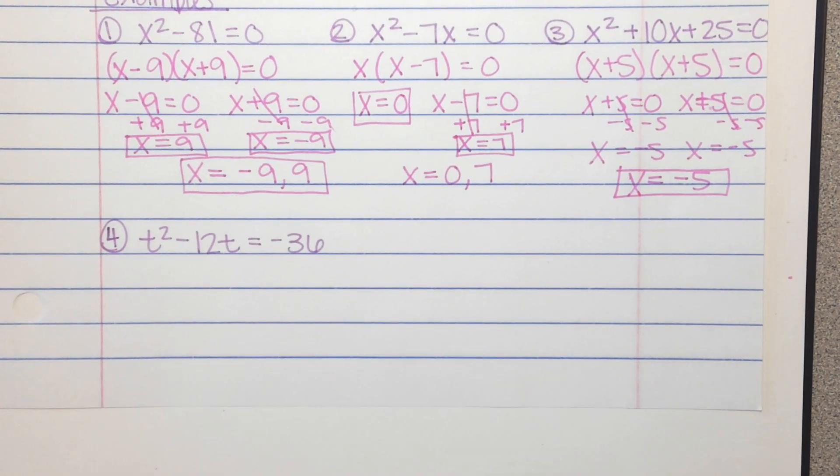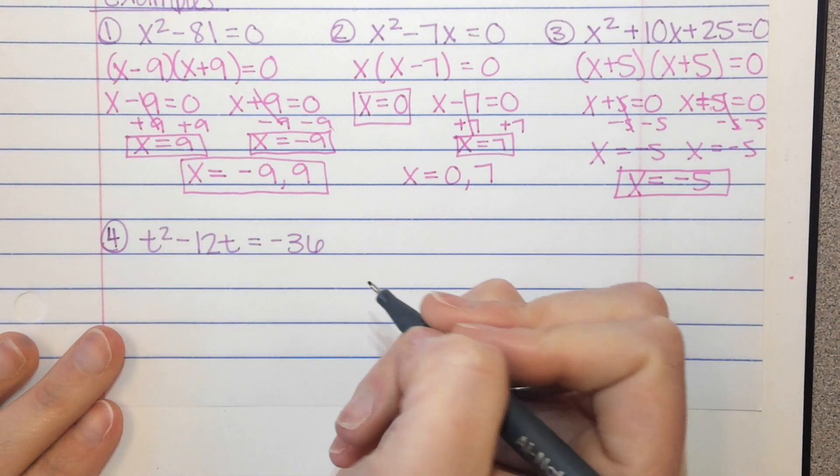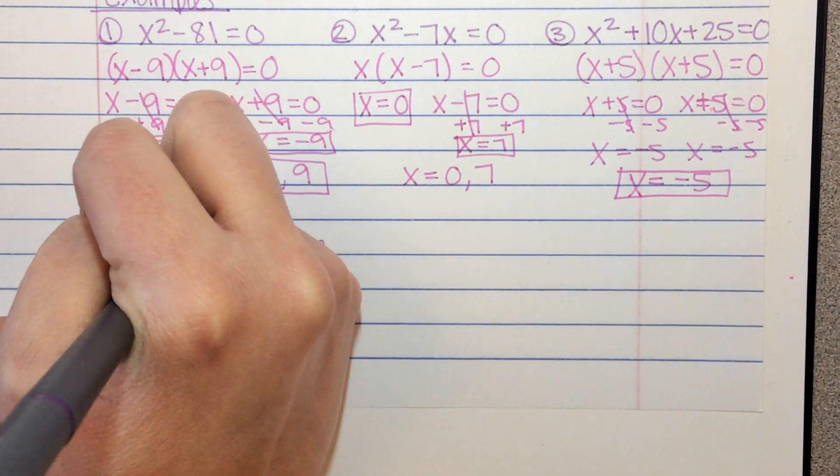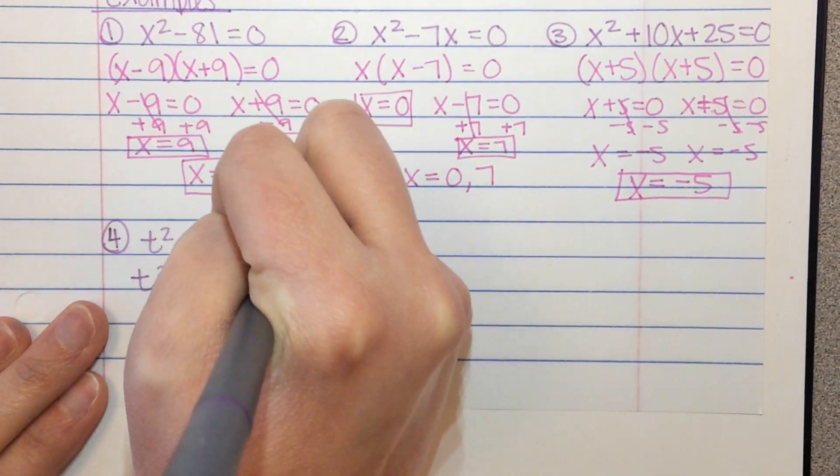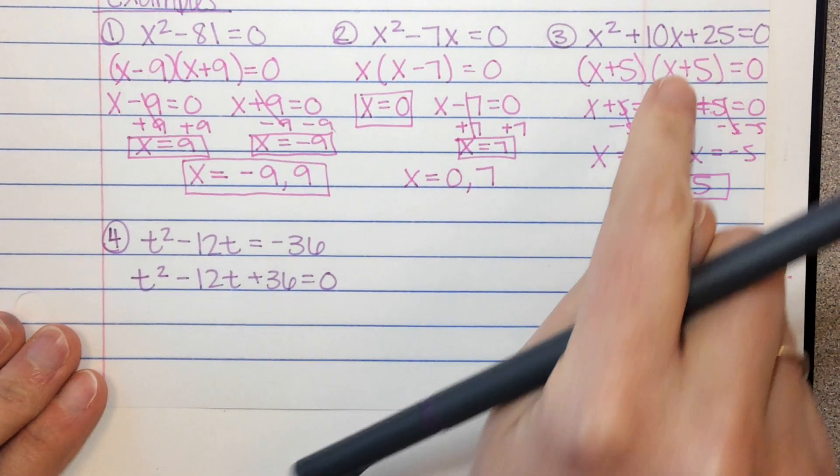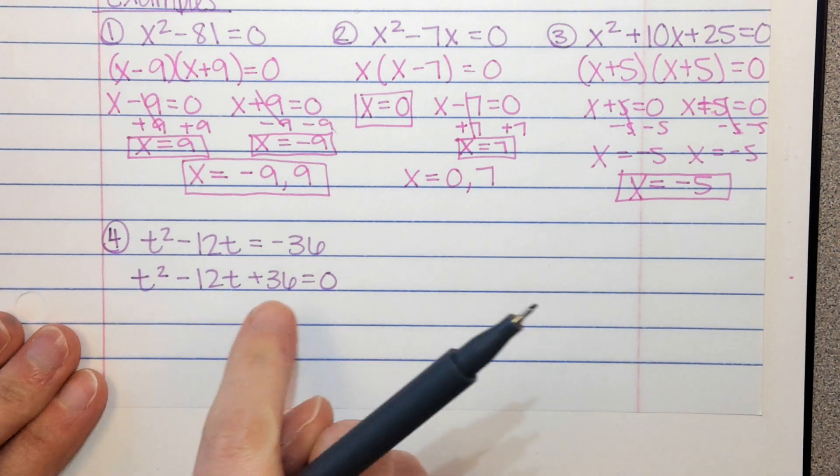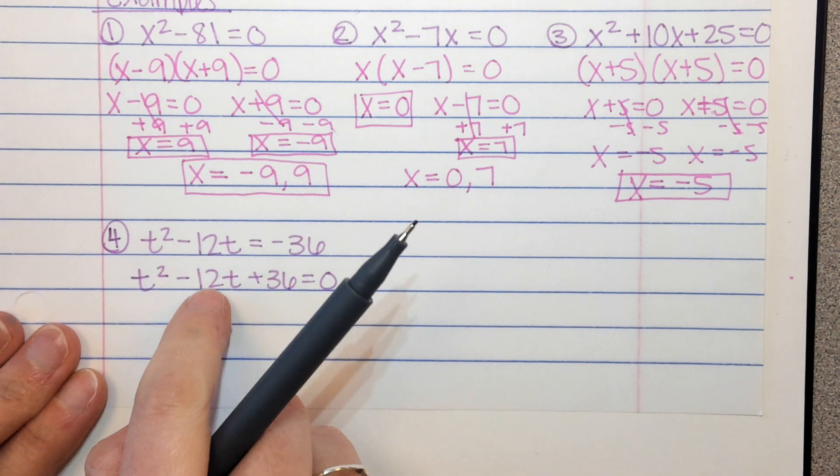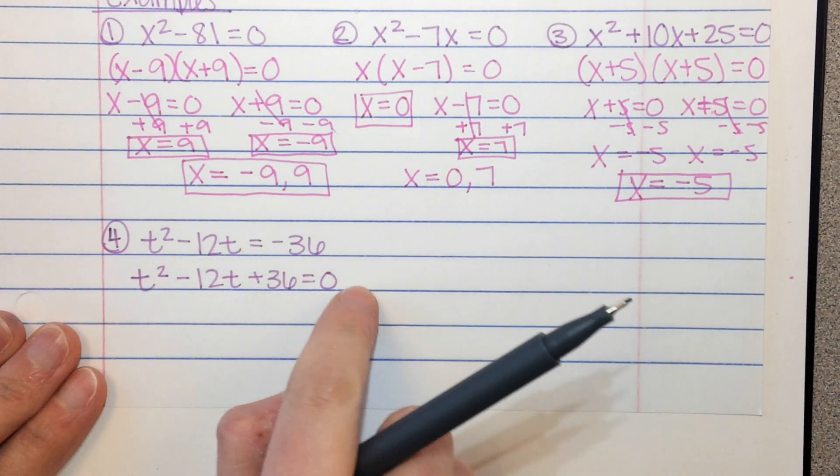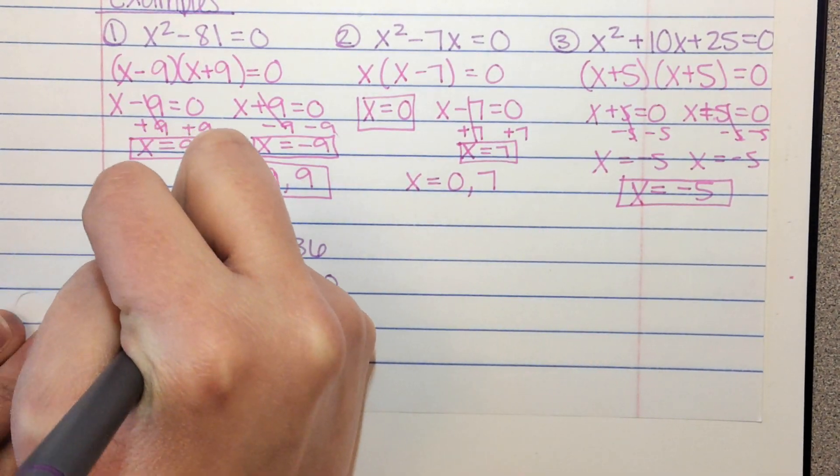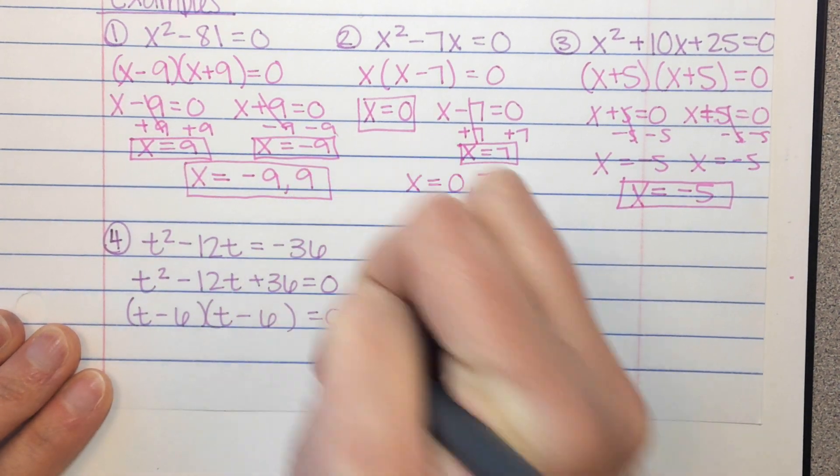Here's number 4. We have t squared minus 12t equals negative 36. That's not set equal to 0, so I'm going to have to move this negative 36 to the other side. So that changes to t squared minus 12t plus 36 equals 0. Now, this is another one of our special cases, because we have perfect squares. The square root of 36 is 6. So 2 times 1 times 6 is 12. So this is a special case, quadratic. So I can do t minus 6 and t minus 6 equals 0.